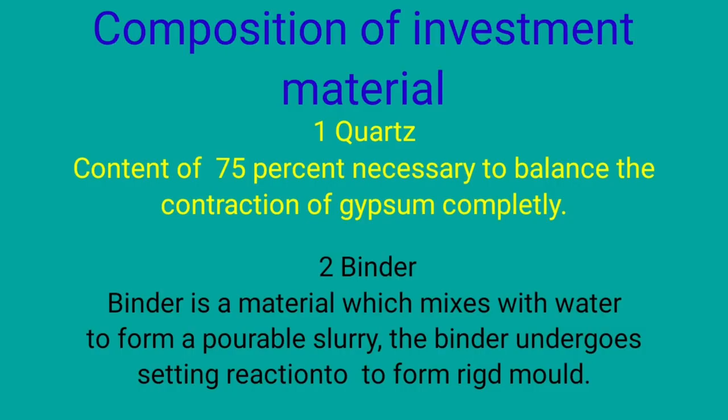Composition of investment material: 1. Quartz content of 75% — necessary to balance the contraction of gypsum completely. 2. Binder — a material which mixes with water to form a pourable slurry. The binder undergoes a setting reaction to form a rigid mold.